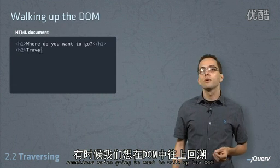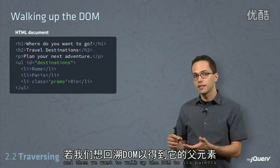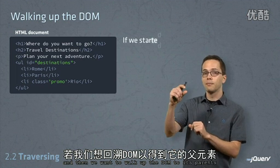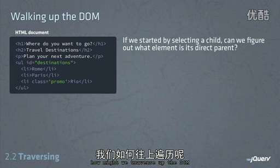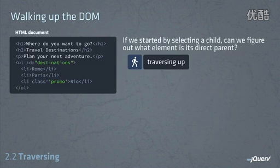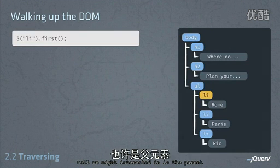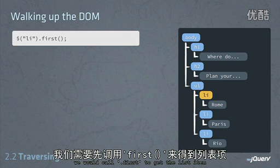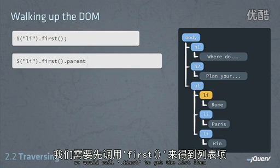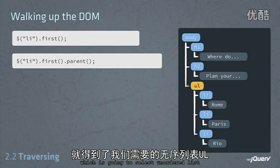Sometimes we're going to want to walk up the DOM. We might be able to select a child element and then want to walk up the DOM to its parent. So here we've selected the first list item, but what we might be interested in is the parent. To get the parent, we would call first to get the list item, and then we can simply call parent, which is going to select the unordered list.